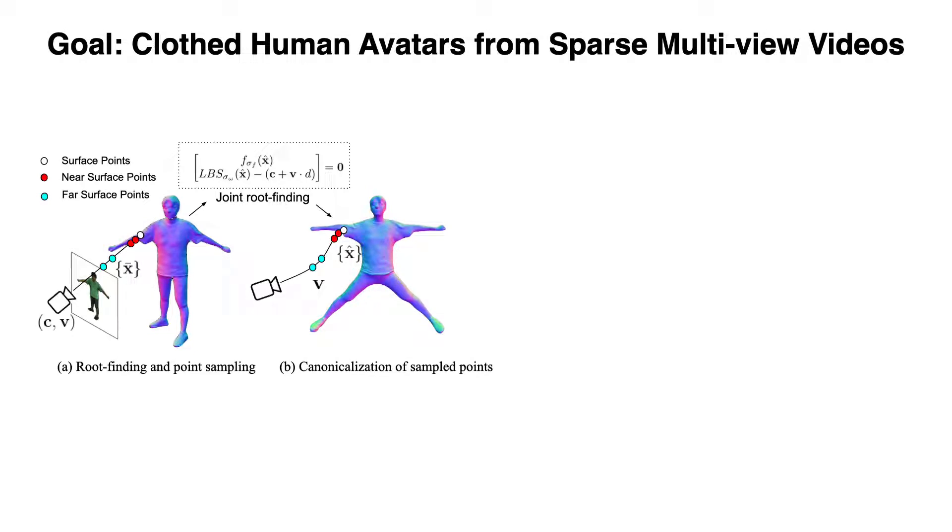The proposed joint root-finding algorithm enables accurate point sampling around the ISO surface for volume rendering without relying on expensive importance sampling.